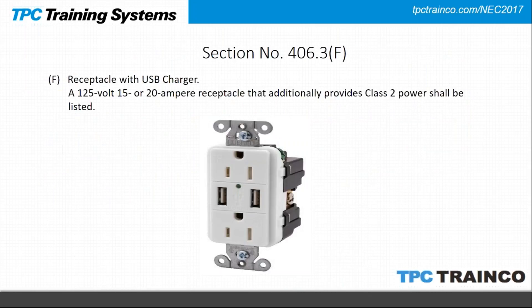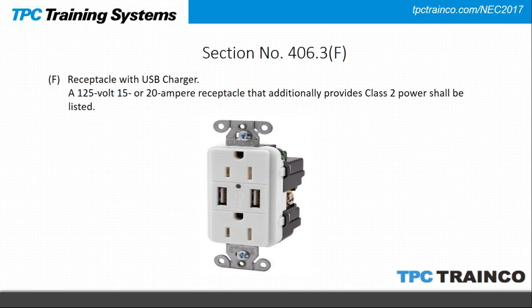The last change is in Article 406 under receptacles: receptacles with USB chargers must now be listed by a recognized listing agency. These receptacles have been available for a while, but chargers were being added to existing receptacles in ways that weren't ideal for charging electronic equipment. Going forward, all USB receptacles must be UL listed; if they are not listed, they are not legal to install. With that, I'll turn it back over to Eric to wrap up.